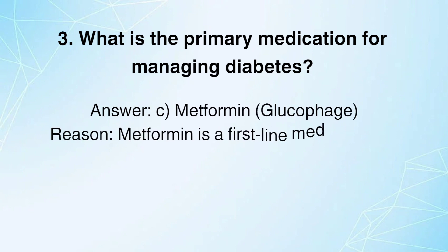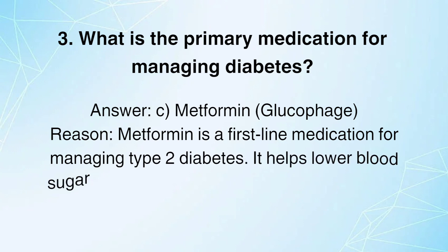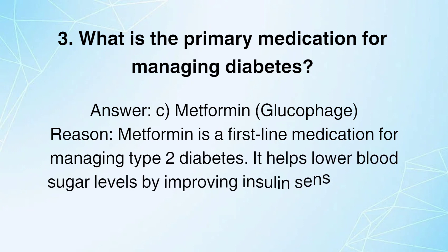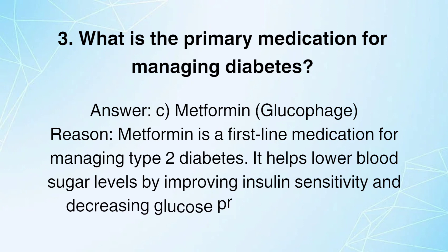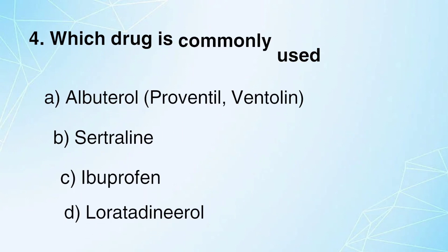Answer: C. Metformin (Glucophage). Reason: Metformin is a first-line medication for managing type 2 diabetes. It helps lower blood sugar levels by improving insulin sensitivity and decreasing glucose production in the liver.